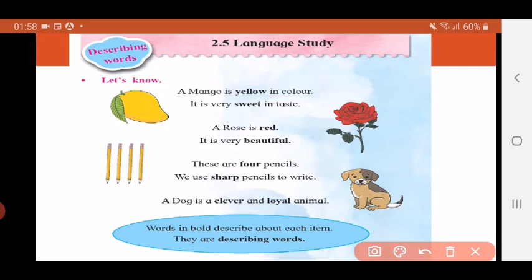In the next you have a picture of a rose. A rose is red. So which word is describing the rose? Red. It is very beautiful. Again which word is talking about the rose? Beautiful. So red and beautiful are describing words on the rose.